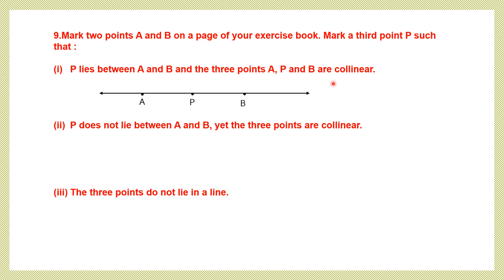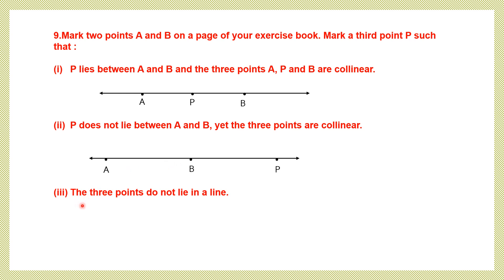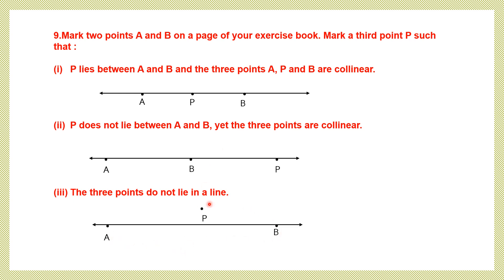Second condition: P does not lie between A and B, yet the three points are collinear. So all three points lie on the same straight line, but P is placed outside the segment AB. Third condition: the three points do not lie in a line — they are not collinear. So we place P off the line through A and B, making them non-collinear points.